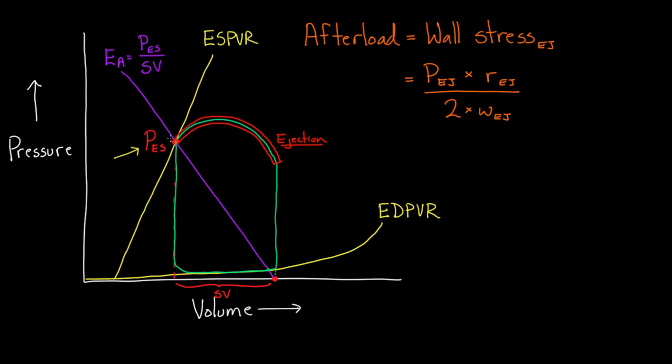This is the final moment of ejection, where pressure is end-systolic, so we use that value as a marker for what afterload is doing. Pressure and afterload are closely related, as you can see in the formula. Now, what would happen if we increased that number? What if we increased the pressure at end-systole?